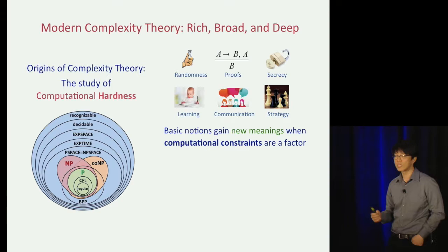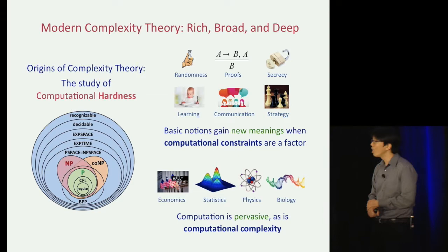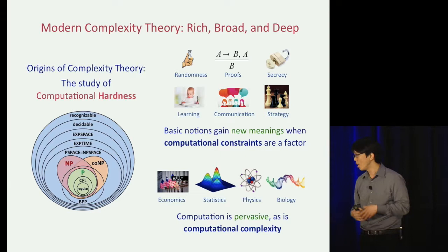Complexity theory has bridged rich connections to the sciences — economics, statistics, physics, and so on. Computation is a pervasive phenomenon. It's not just what happens on laptops. We can view the stock market as performing a computation, and likewise, we can view evolution as performing a computation. Each of these fields has to grapple with some form of computational hardness and complexity.